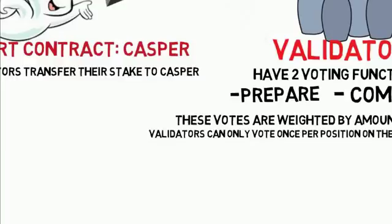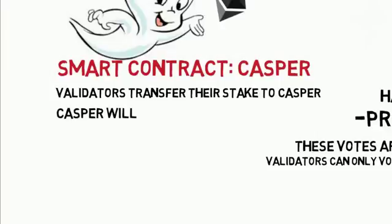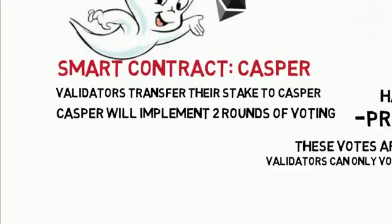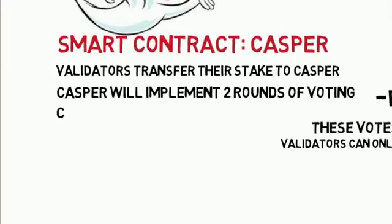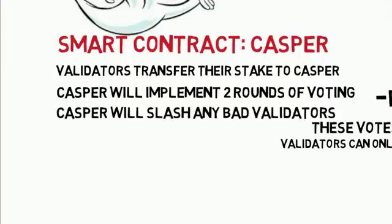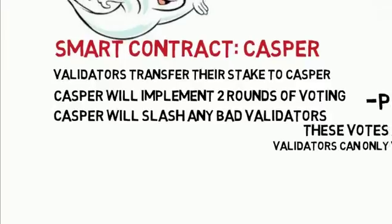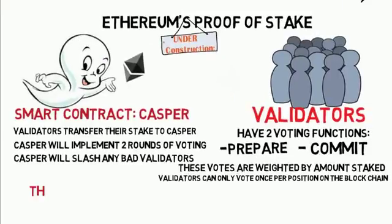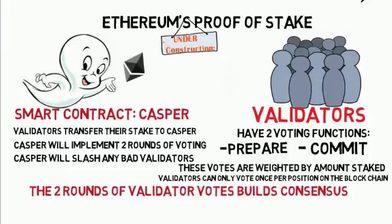Casper will implement two rounds of voting, and also Casper will take reports of cheating and slash — aka penalize — bad validators. These two rounds of validator voting is what builds consensus on the blockchain.